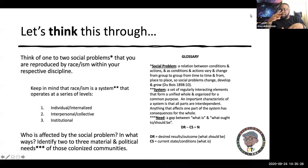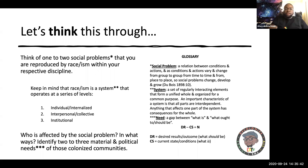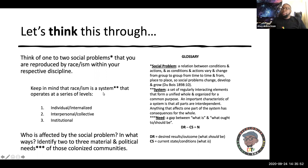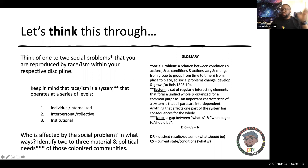Think of one to two social problems reproduced by racism within your respective discipline — it could be the way people talk about certain things, or technological devices your discipline produces that harm different communities. Keep in mind racism is a system that operates at a series of levels: individual, interpersonal, institutional. Because those things operate systemically, it occurs across institutions where all parts are interdependent — anything that affects one part of the system has consequences for the whole.